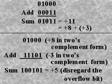For a positive number, the 2's complement representation is the same as the sign and magnitude form. Let A equal plus 8 and B equals plus 3. Plus 8 is 0, 1, 0, 0, 0 in the sign and magnitude form and also in the 2's complement form.